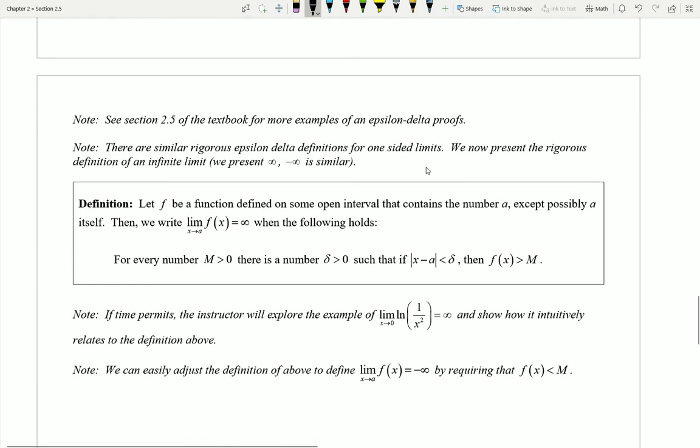What's also interesting is that we can come up with rigorous definitions for what it would look like to have limits that approach infinity. That is, where infinity is the answer to one of our limits. This is the rigorous definition and I'll give you a loose idea of how this works.